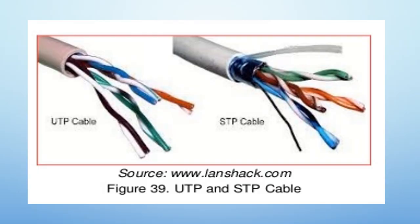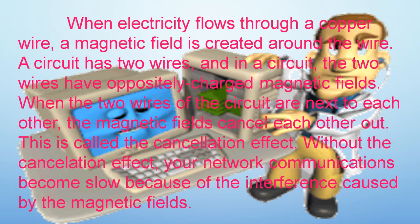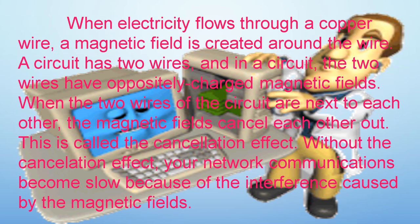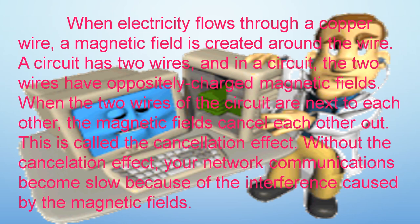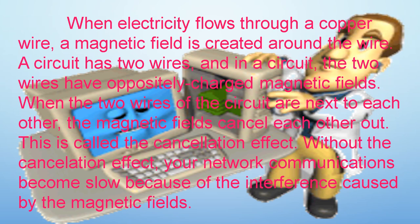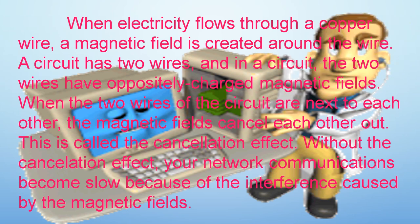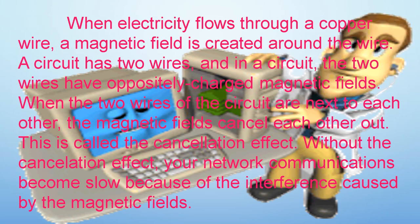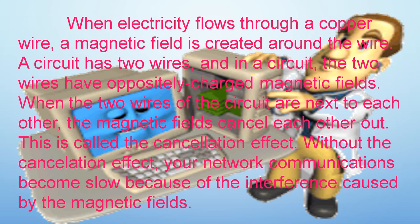In figure 39, these are the images of UTP and STP cable. When electricity flows through a copper wire, a magnetic field is created around the wire. A circuit has two wires, and in a circuit, the two wires have oppositely charged magnetic fields. When the two wires of the circuit are next to each other, the magnetic fields cancel each other out. This is called the cancellation effect. Without the cancellation effect, your network communications become slow because of the interference caused by the magnetic fields.